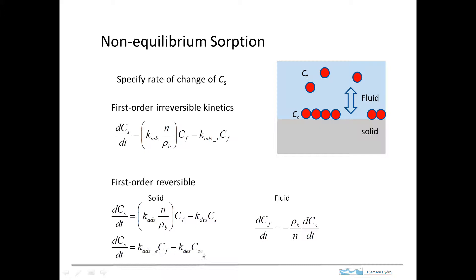This rate expression is a bit different from what we've used previously because it has both the concentration on the solid and the concentration in the fluid as variables. This requires another coupled expression: we also need a rate expression describing how concentration in the fluid changes with time. The rate of change of fluid concentration equals the negative of the rate of change on the solids, multiplied by the porosity and bulk density terms to make the units compatible.